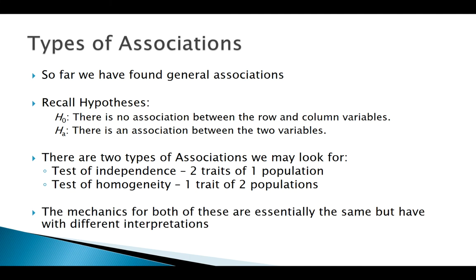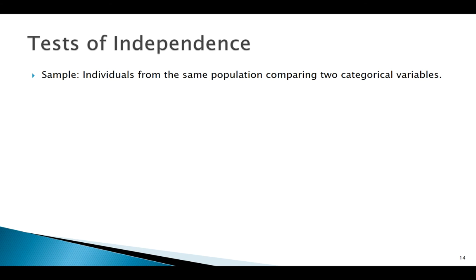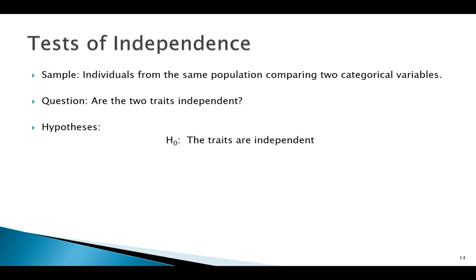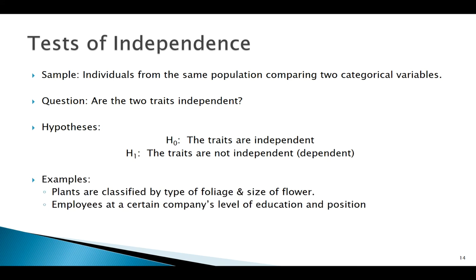We've already been over the mechanics of these types of tests, but let's expand on tests of independence. My sample would be a bunch of individuals from the same population, comparing two variables. The question we're trying to answer is: are these two traits independent? So our null is that they are independent — no association — and the alternative is that they're not independent, or dependent.